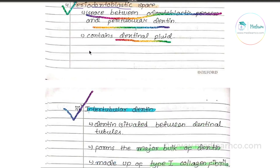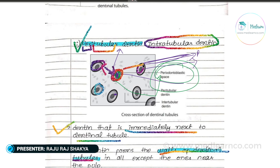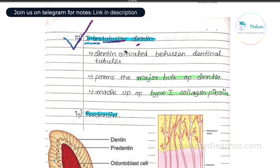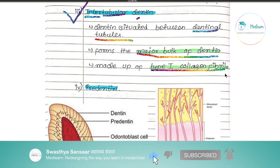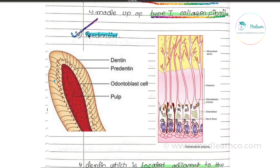The intertubular dentin is the dentin situated between the dentinal tubules. It forms the major bulk of the dentin and is made up of type 1 collagen fibers.